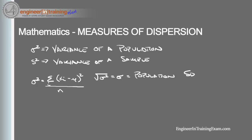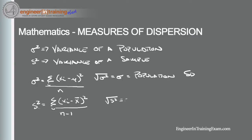The variance of a sample is defined slightly differently. The sample variance s² is how much each individual measurement deviates from the sample mean. The formula is the sum of (xᵢ minus the sample mean) squared, divided by n minus one. The sample standard deviation is simply the square root of the sample variance and is denoted by s.